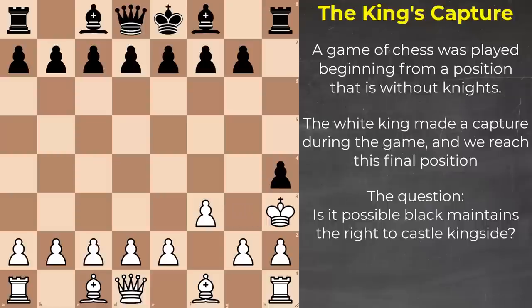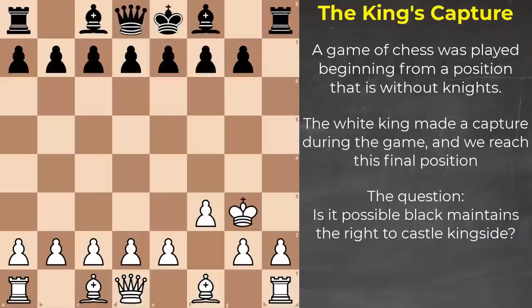Maybe the king could go here. Now, what can we do as black in order to capture this pawn? You may think this rook has to leave. And now, after the pawn isn't defended, we could take, and then the king could do something like this — get back to home base — and we reach this final position. So is the answer no, it is not possible that black maintains the right to castle kingside? Well, not quite. The answer to this question is yes.